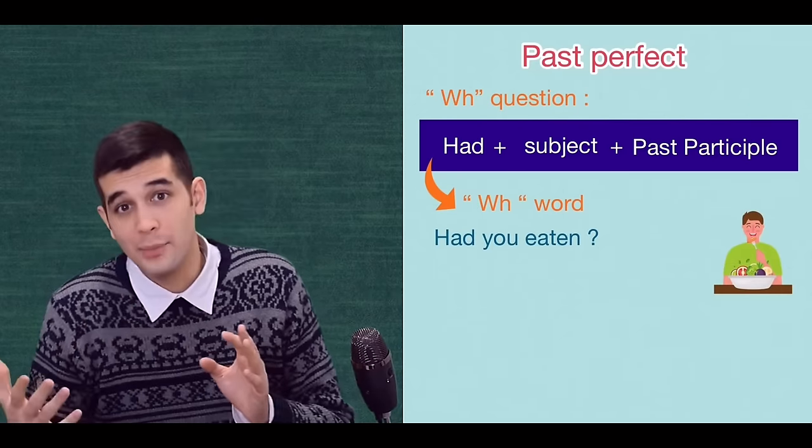'She had gone' — the yes/no question is 'Had she gone?' and the WH question is 'Where had she gone?' And that is the end of this lesson.